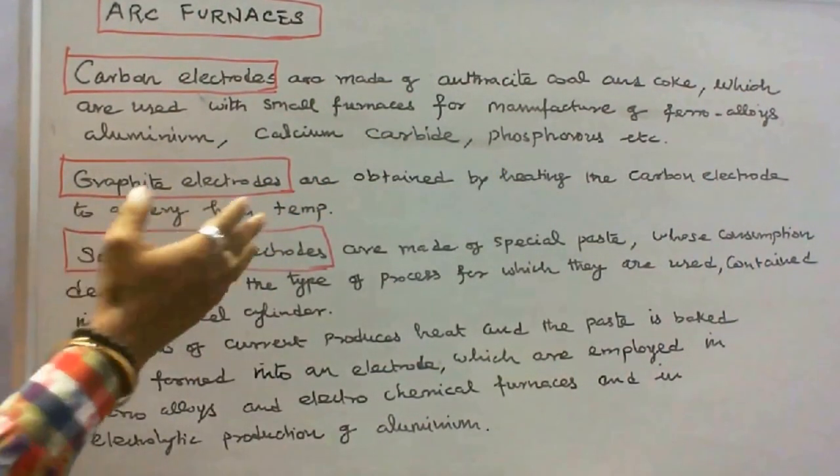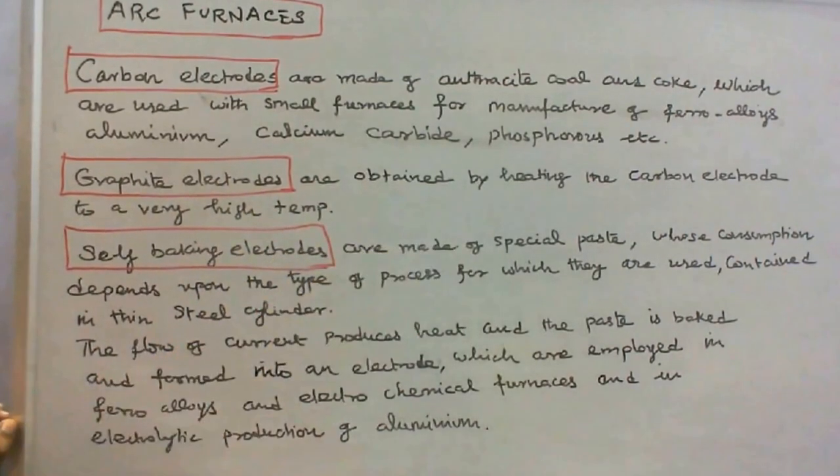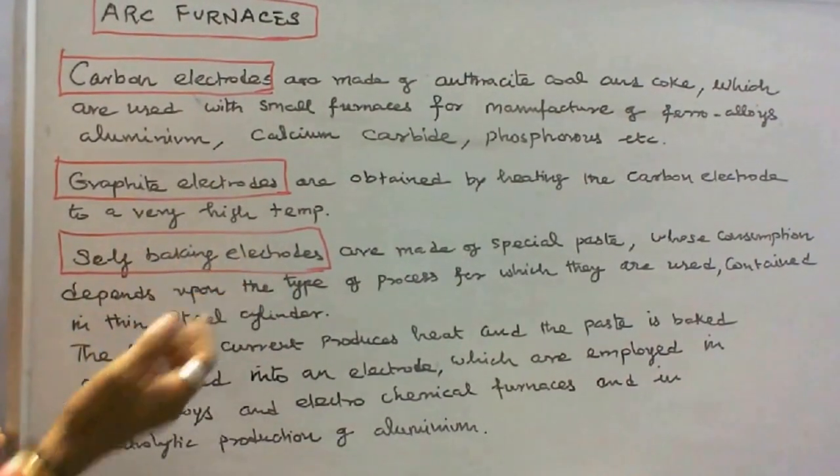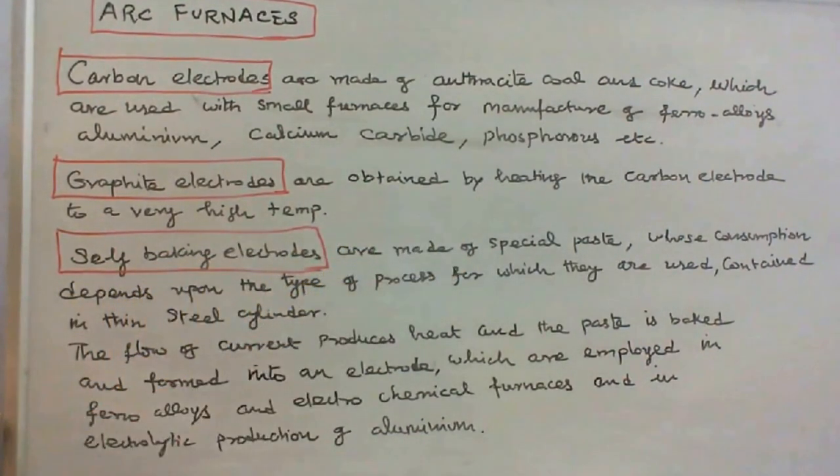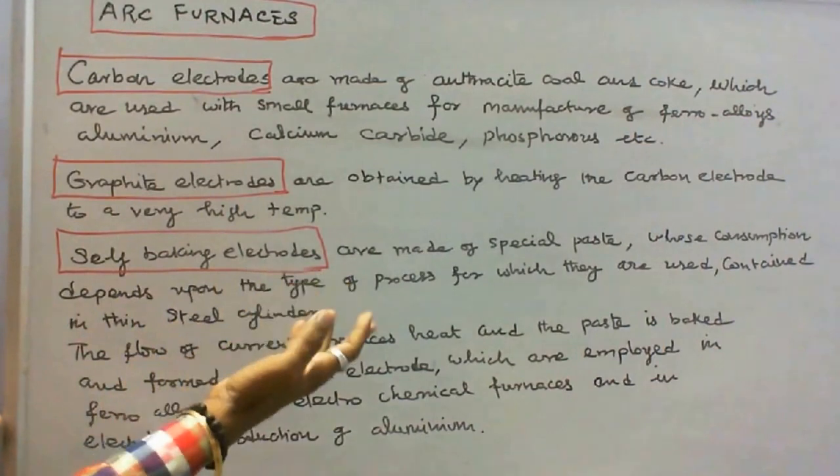Graphite electrodes are obtained by heating the carbon electrode to a very high temperature. Self-baking electrodes are made of special paste whose consumption depends upon the type of process.